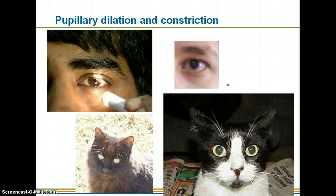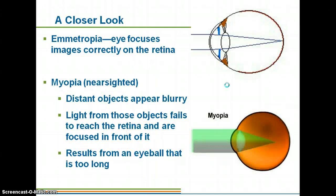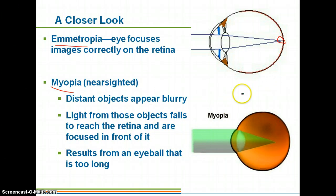If you have normal vision — 20/20 vision — you have what's called emmetropia, where your eye focuses images correctly on the retina, so the focal point is right on the retinal wall. If you are nearsighted, that's called myopia, and distant objects appear blurry because the focal point of what you're looking at never actually reaches the retina. This can be caused by an eyeball that is too long, sometimes described as football-shaped.